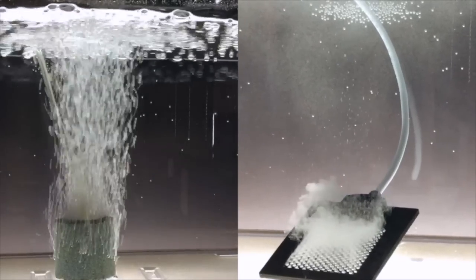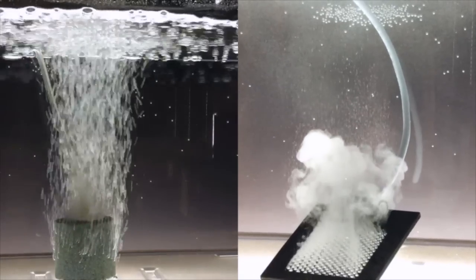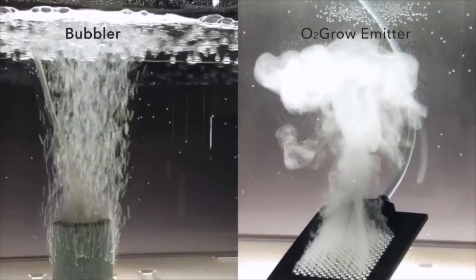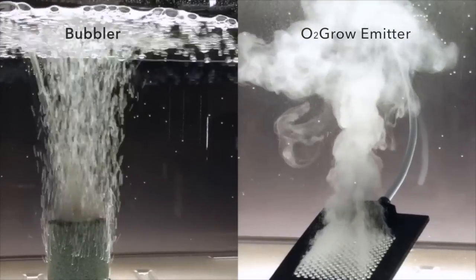Bubblers and Venturis are devices that take the air you and I breathe and either push it mechanically through a stone or, in the case of Venturis, mix the ambient air with the water at a super high speed.